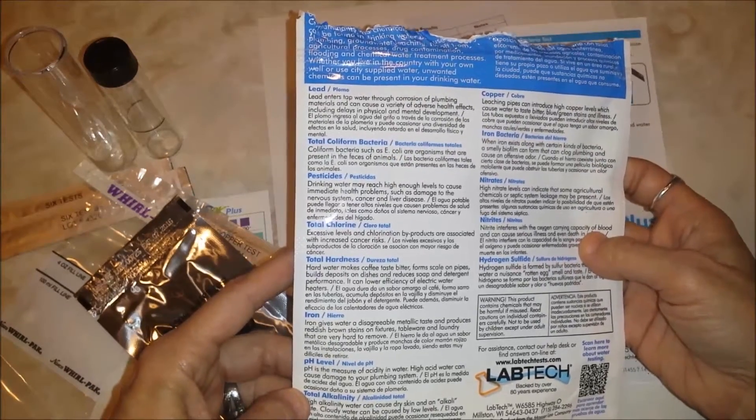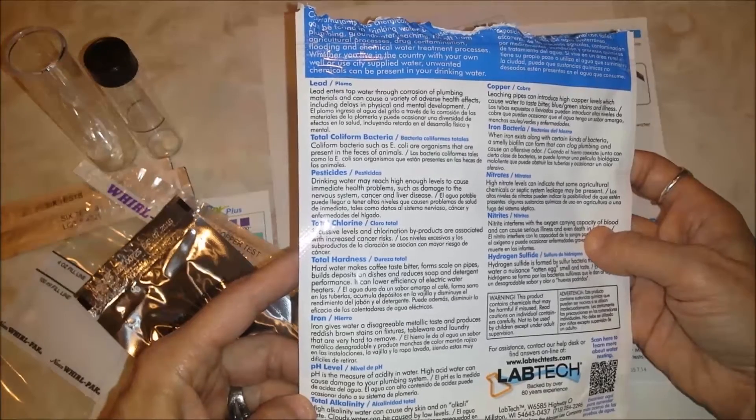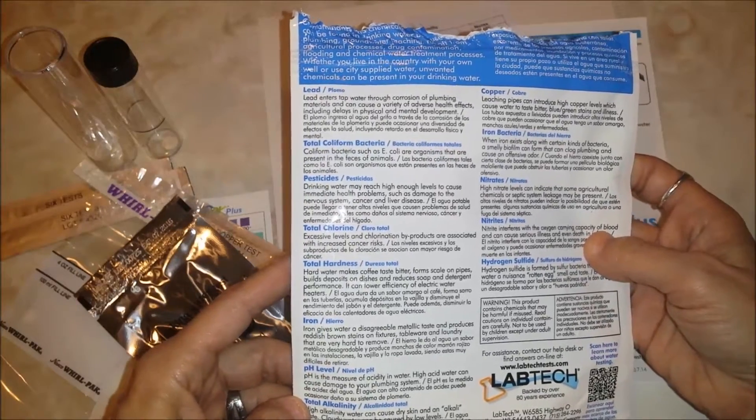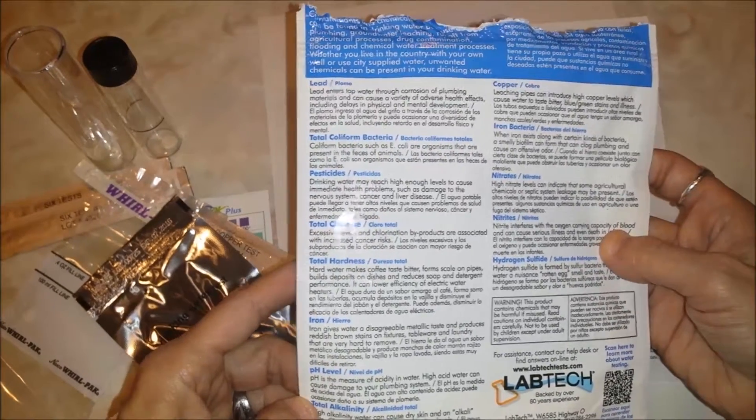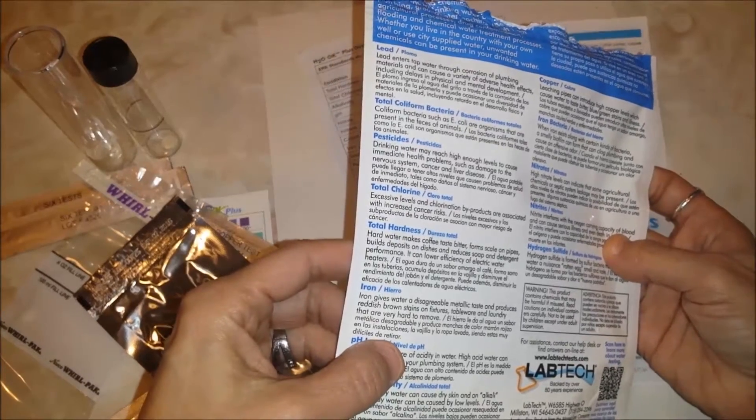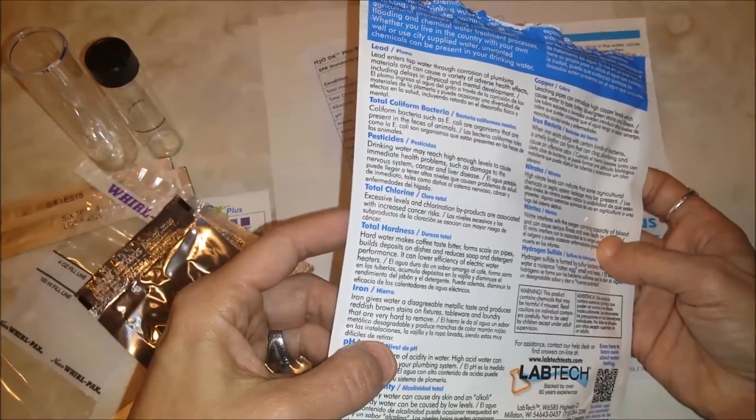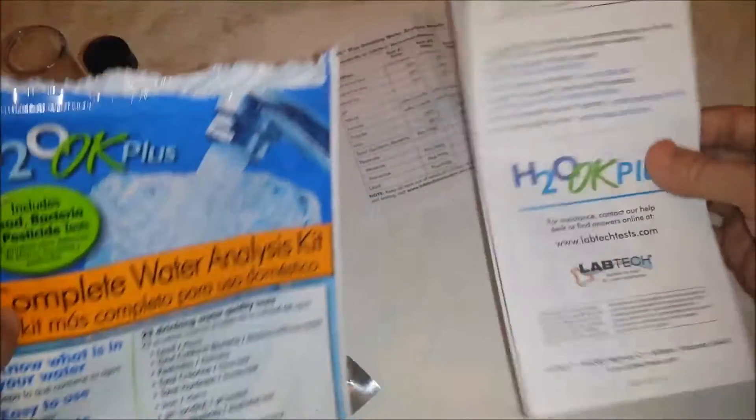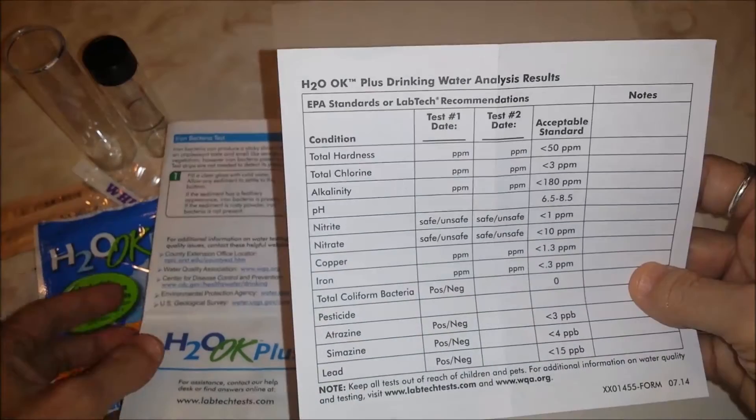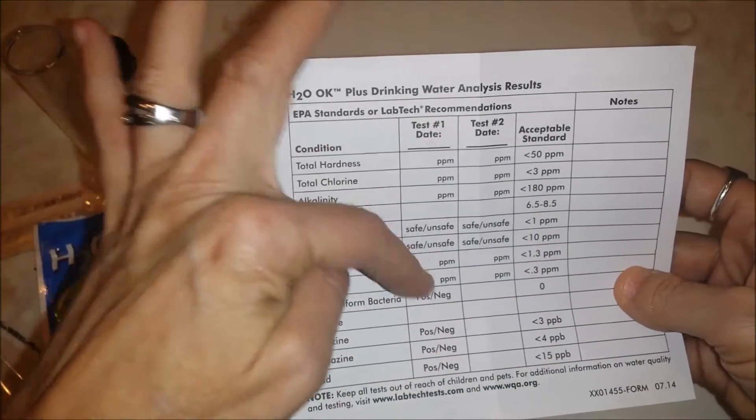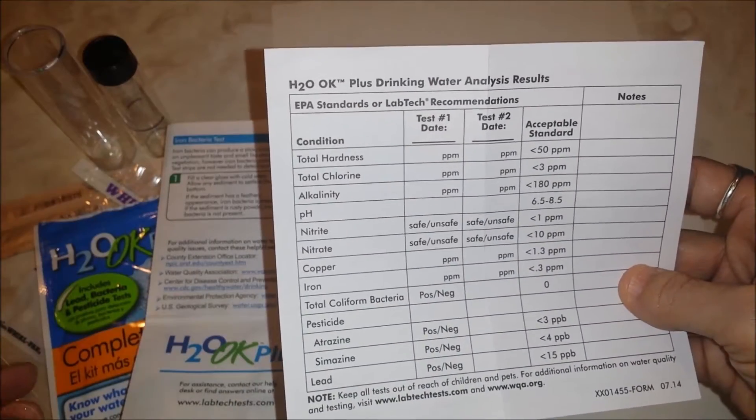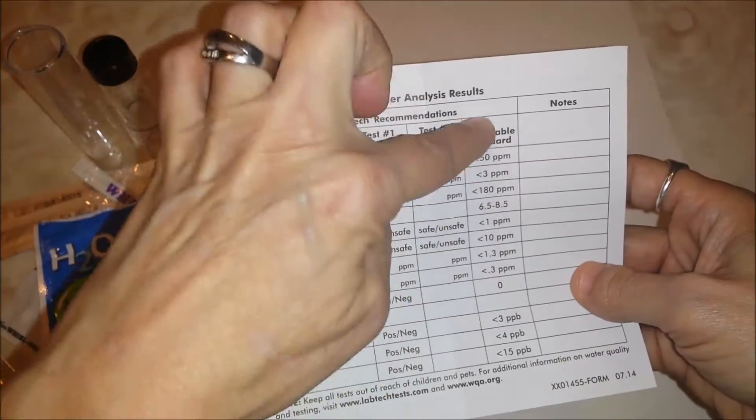The back of the package tells you all the things it's going to test for and gives you the warnings of each item if it's in your water at too high of a level. The kit came with detailed instructions and a little log that has the ability to log your results on two different days. It gives you the acceptable standard.